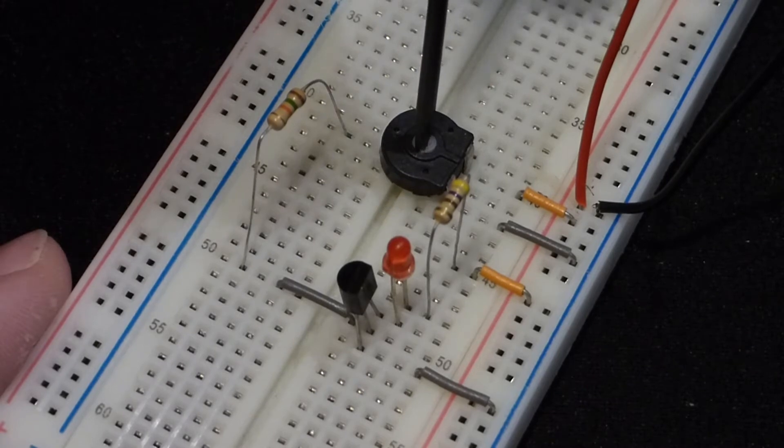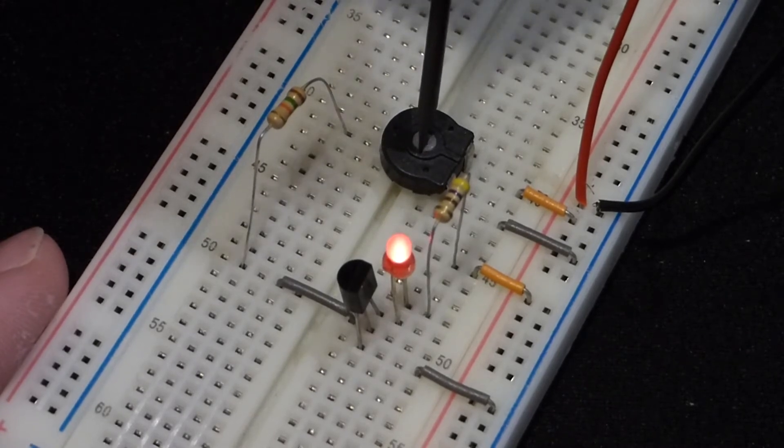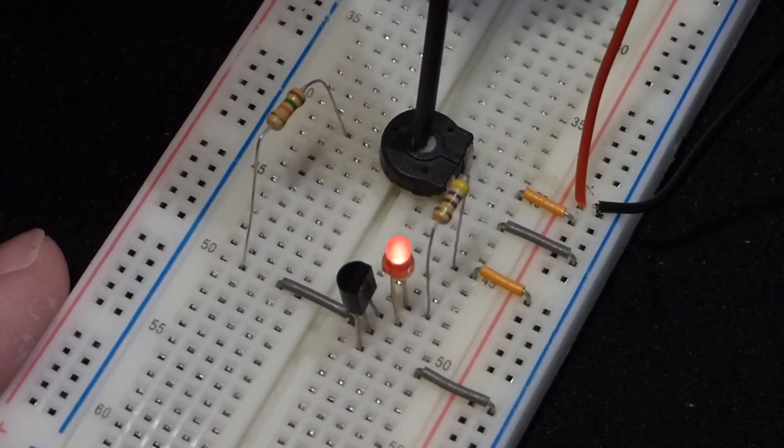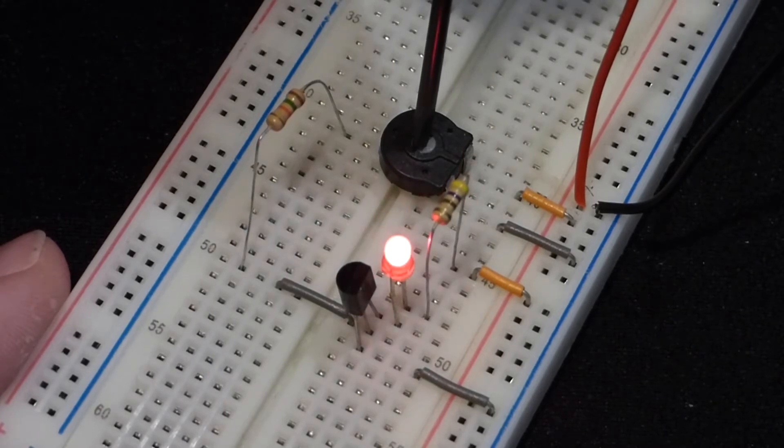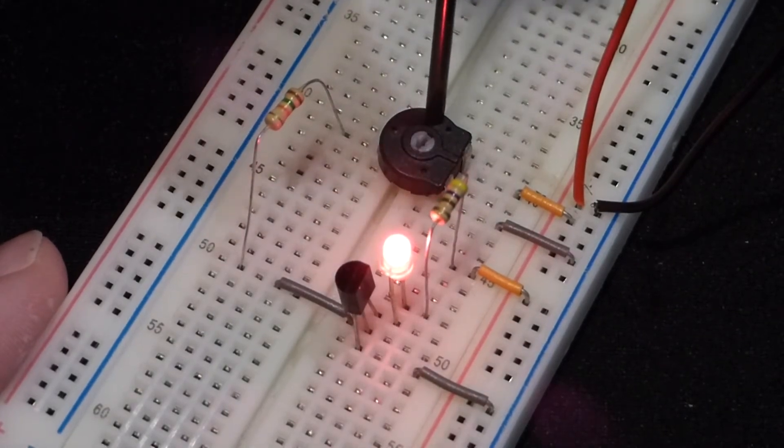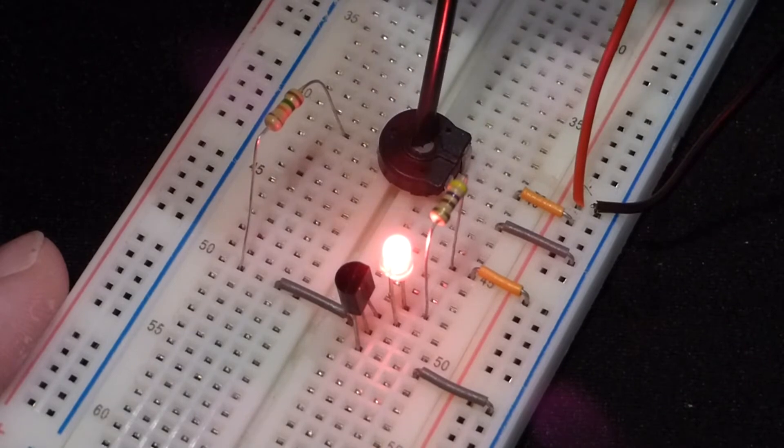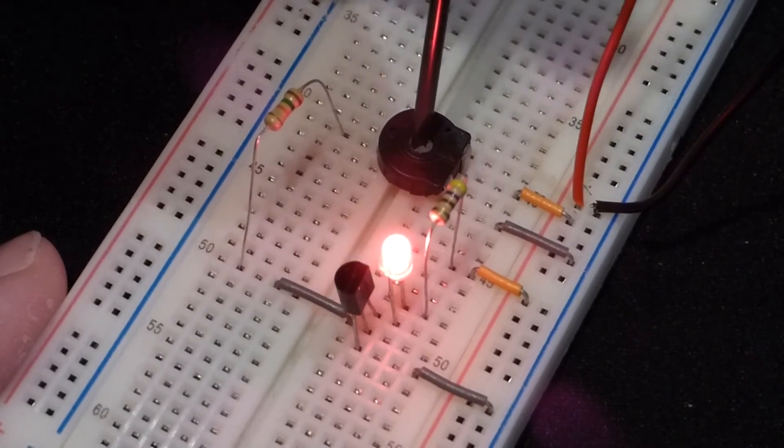And now I'll slowly turn the voltage up and you see at some point the transistor comes on. And as I turn it up a little more it gets brighter and then at some point it's as bright as it will get no matter how high I turn the voltage.